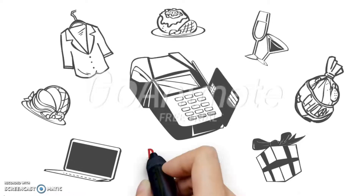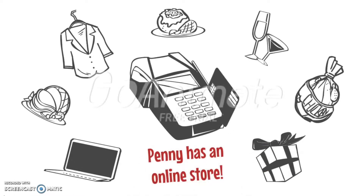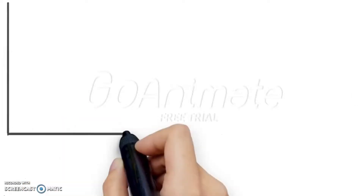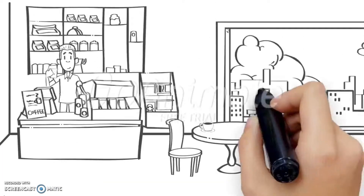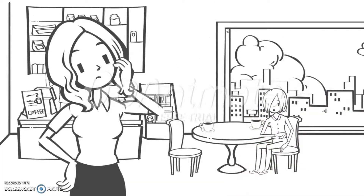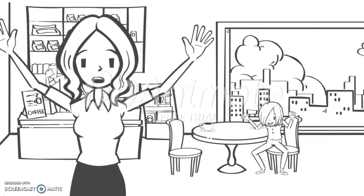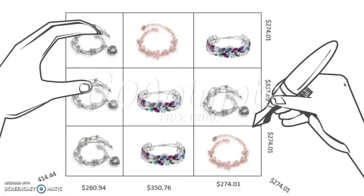Penny has an online store where she sells bracelets, and her friends are always asking her for a discount. It's endless. 'I'll give you a discount if you could solve my challenge,' she said. The challenge is: each column in this table adds up to the price next to it. You have to find out how much each bracelet costs, and that's the discount price you get.